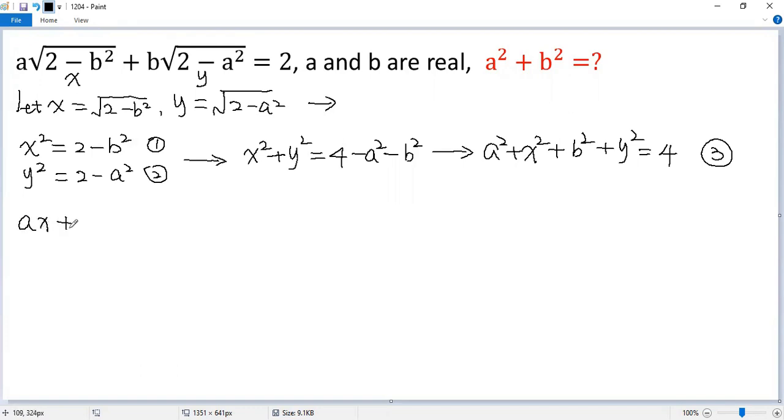So ax plus by equals 2. Then both sides multiply by 2. We get 2ax plus 2by equals 4. We denote it as condition 4.